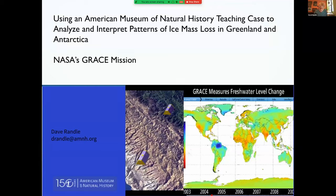Hi, everybody. It's a pleasure to be here. I'm going to share with you today an example of one of the resources that we have at the American Museum of Natural History in New York. It's called the Teaching Case. In this particular one, we're going to use it to look at ice mass loss in Greenland and Antarctica, and it's based on NASA's GRACE mission.